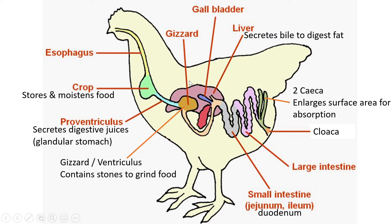The liver's main function is to secrete bile to digest fat — that's one of the key things the liver does, and it also helps with digestion generally. The gallbladder stores all the bile. After the liver produces bile, it gets stored in the gallbladder until it's needed.